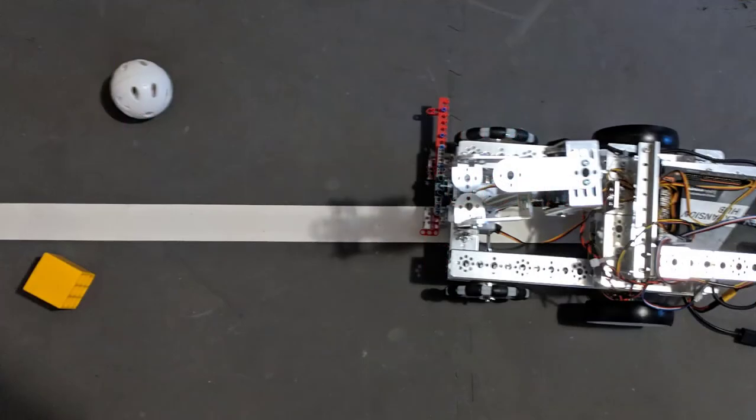In this video, I'll demonstrate how to create an autonomous op mode that causes a robot to seek and grab Rover Ruckus gold minerals. To access an introductory video on using TensorFlow, use the link displayed on the screen.